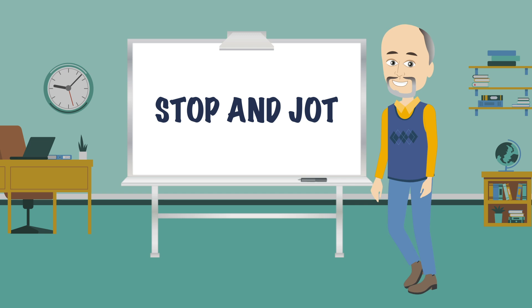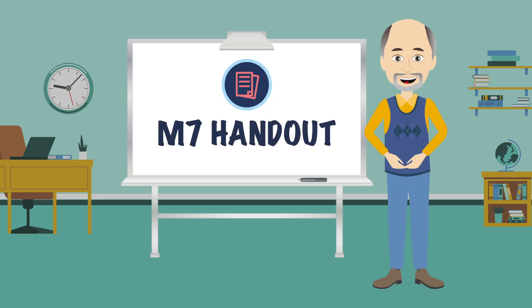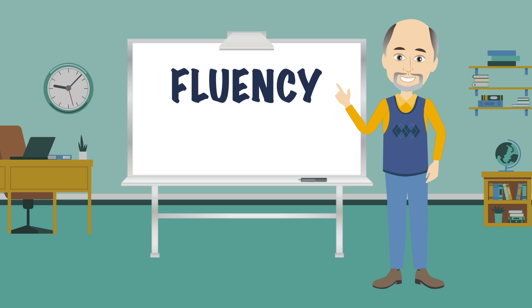It is time to do our first stop and jot for module 7. Don't forget to grab your module 7 handout. Let's start by making sure that we have a firm definition of fluency. Fluency is the ability to read text at an appropriate rate with accuracy and prosody.